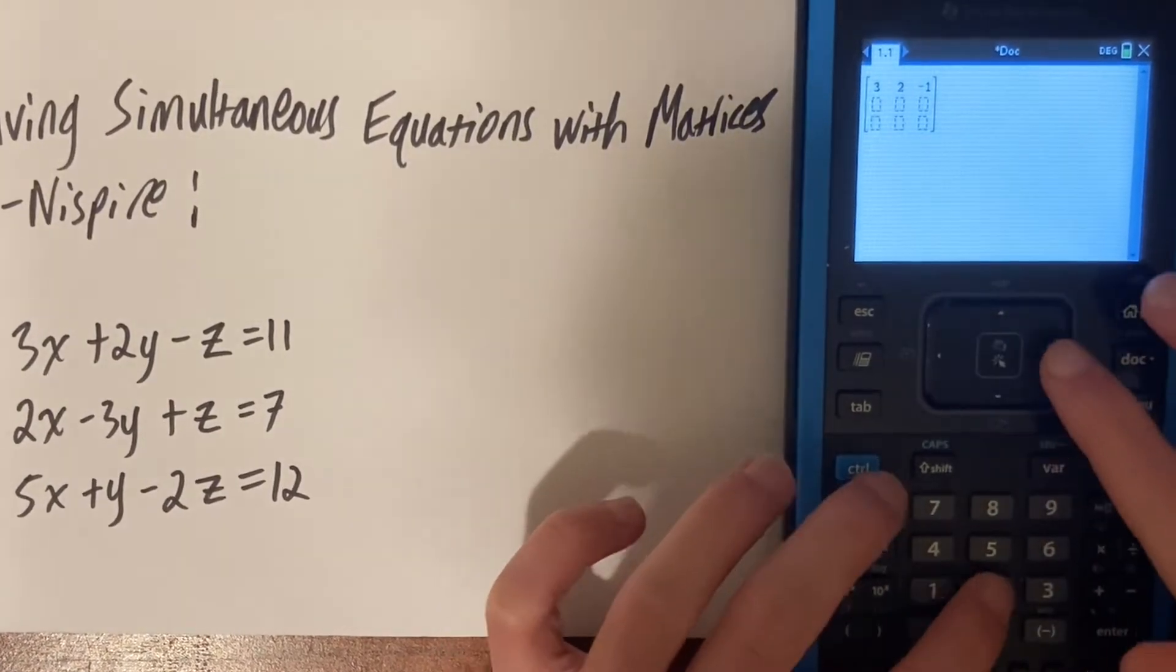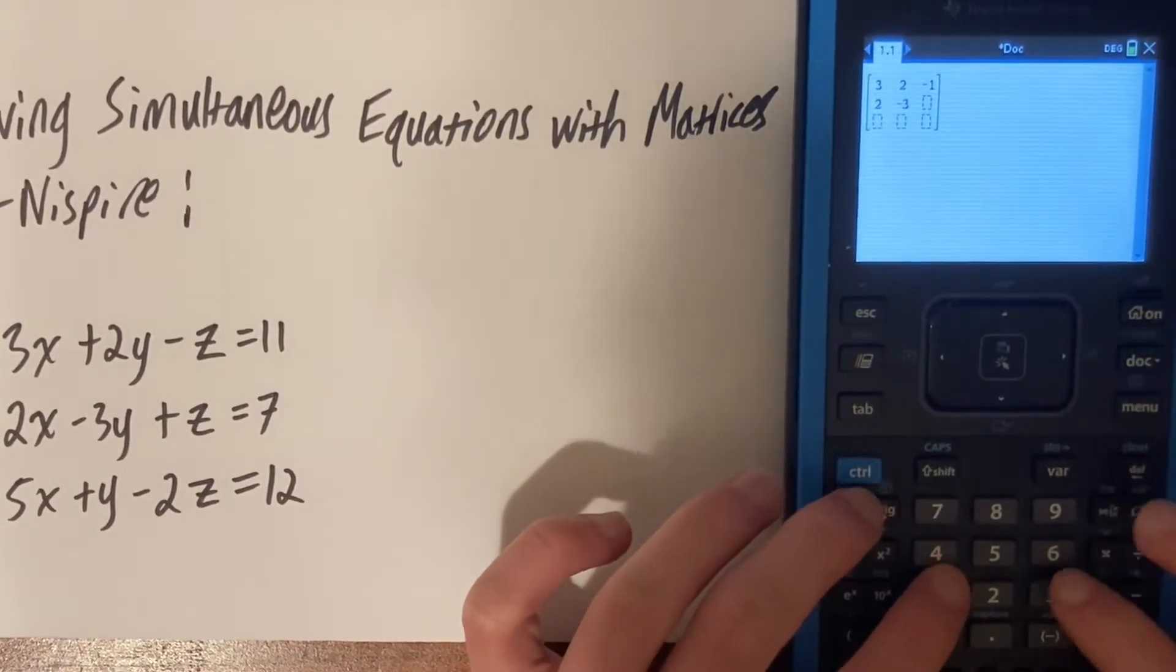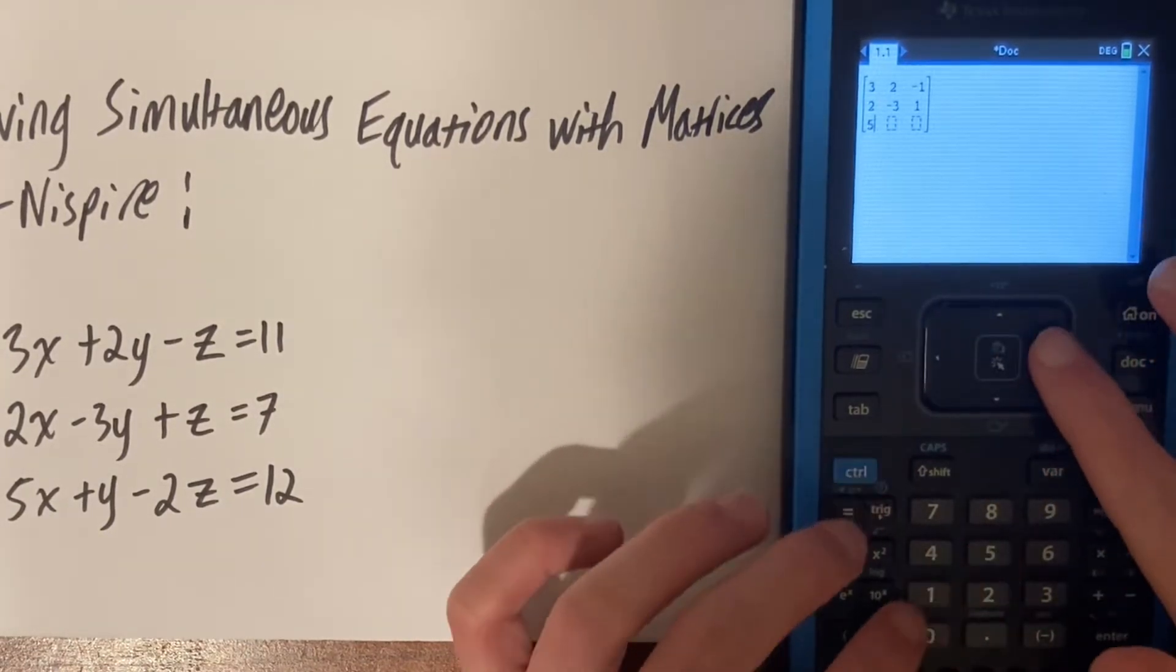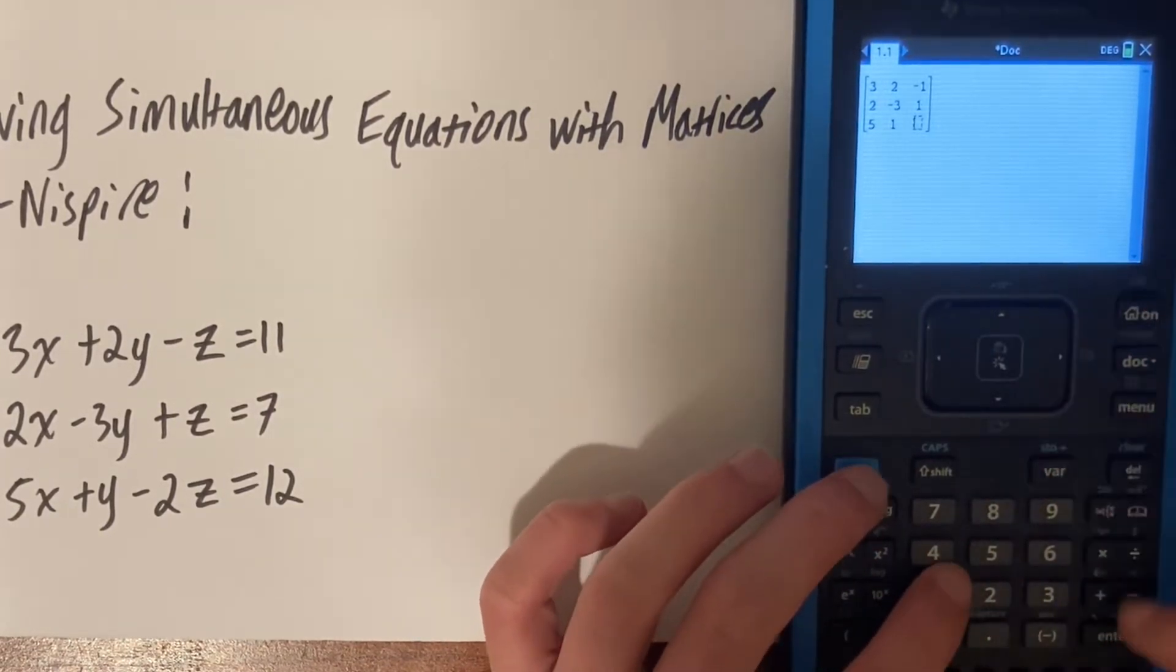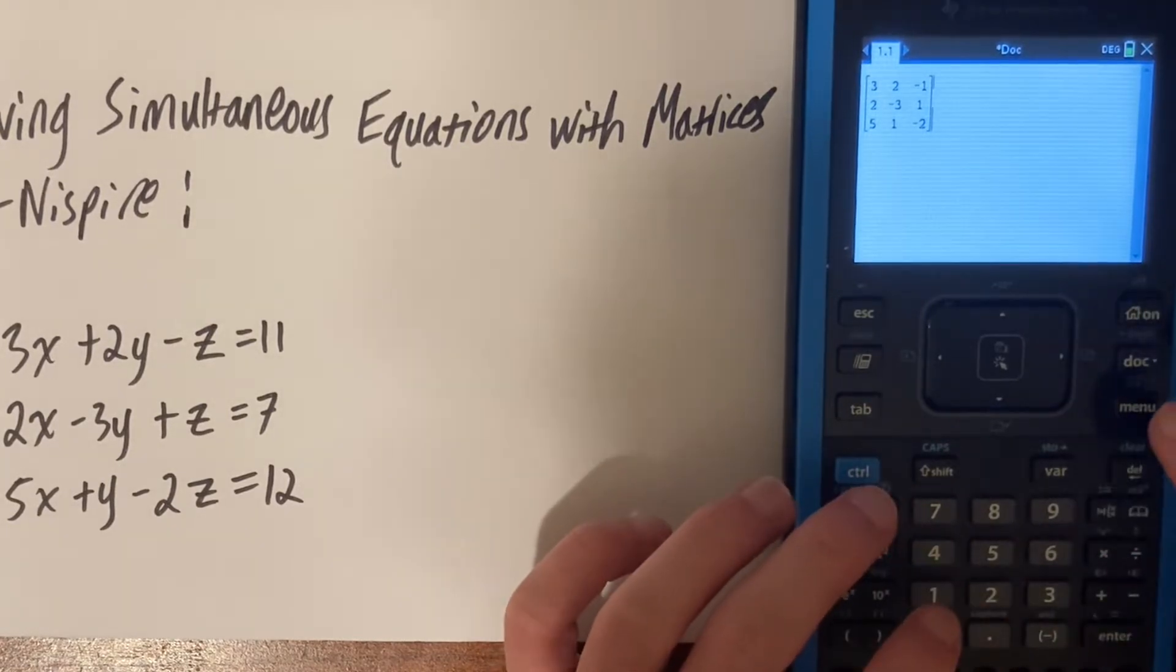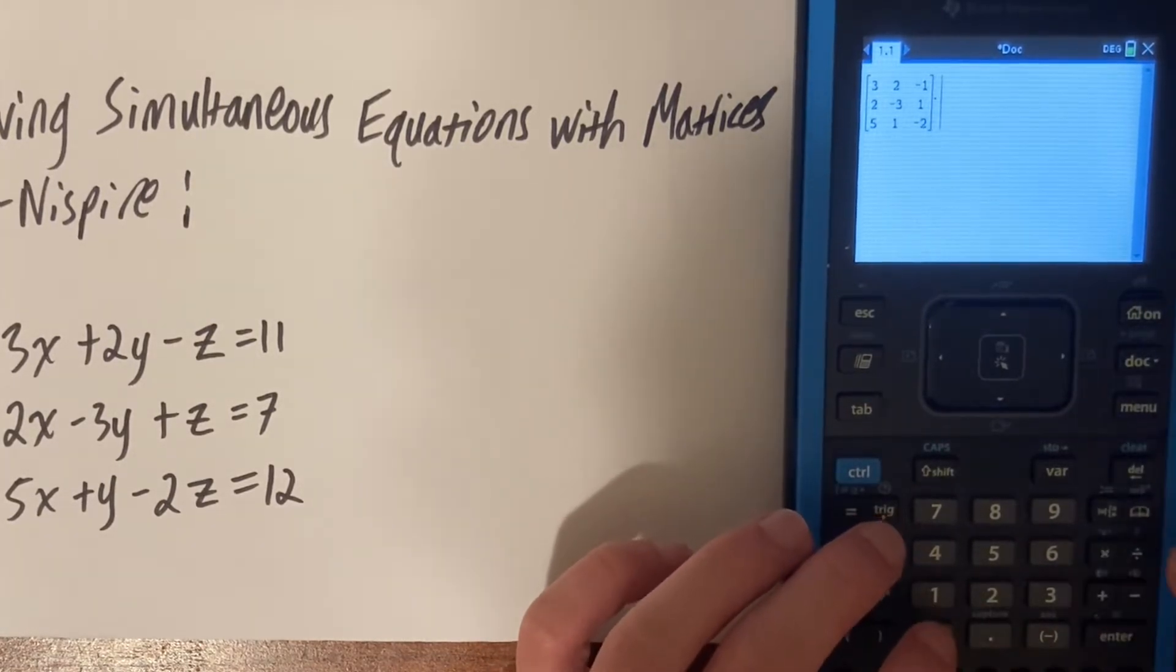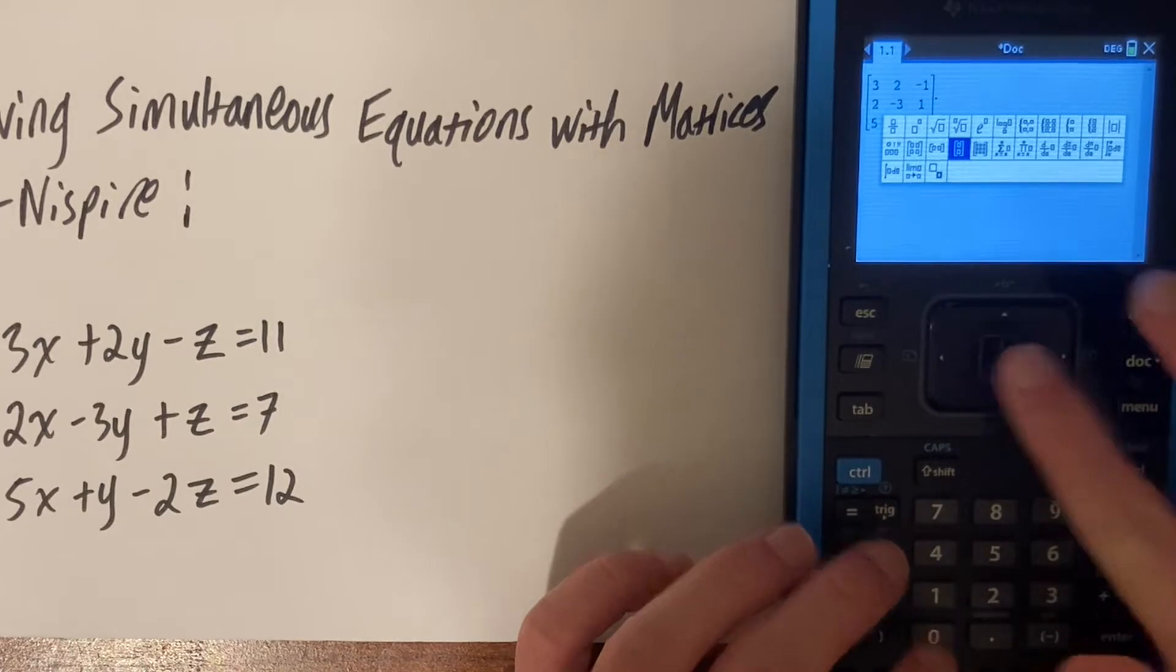Put in the values of the coefficients for x, y, and z. Right before our first x is three, before our first y is two, and before our first z is negative one. Then you're going to want to repeat that process for all of them.